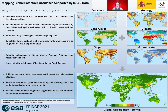As a general overview, potential subsidence is higher over the large aquifer systems of Asia and North America, coastal and deltaic areas of Asia and Europe, and inland basins of North America and the Mediterranean basin.